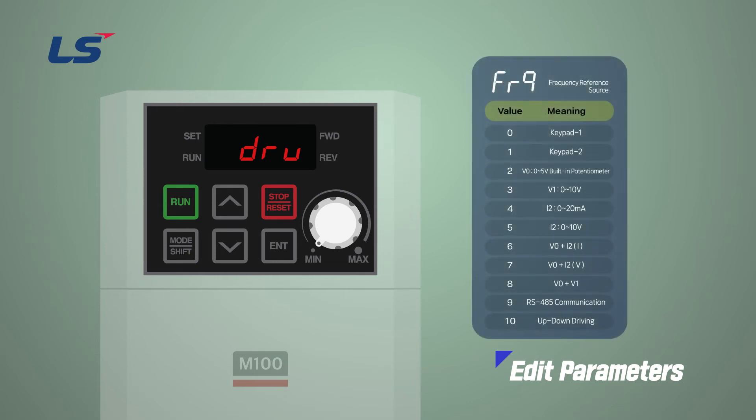Next, to edit the frequency setting method, press the up arrow key once to move to the frequency parameter. Confirm the value by pressing the Enter key.